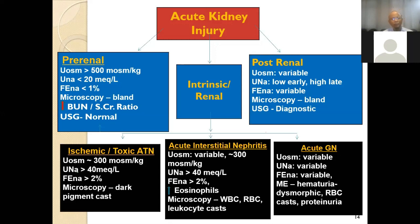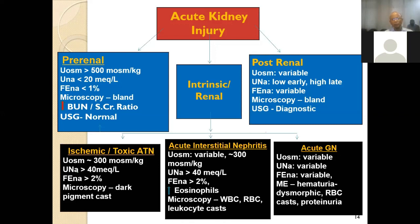In intrinsic renal disease due to ischemic or toxic ATN, urinary osmolality is approximately 300 milliosmol/kg, urinary sodium is more than 40 mEq/L — as sodium is more excreted in the urine — microscopy shows dark pigmented casts, and fractional sodium is more than 2%. In acute interstitial nephritis, urinary osmolality is variable, urinary sodium is more than 40 mEq/L, fractional sodium is more than 2%, and eosinophils are present in the urine.